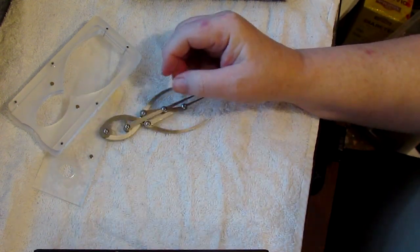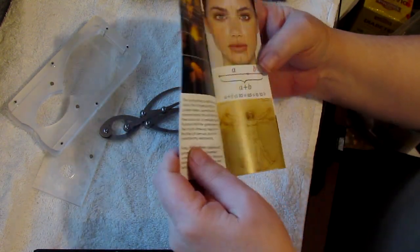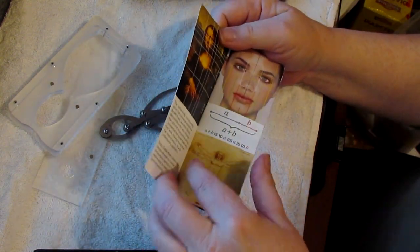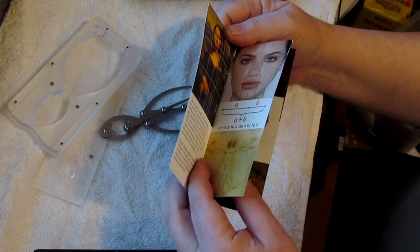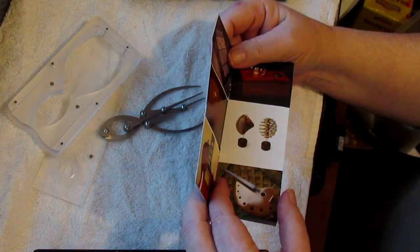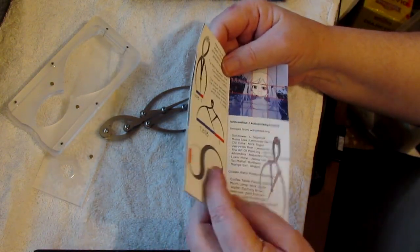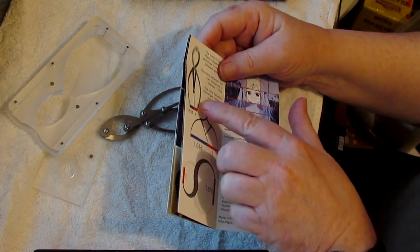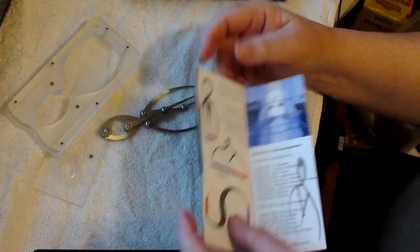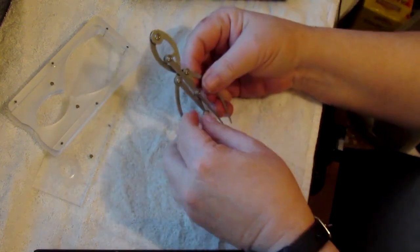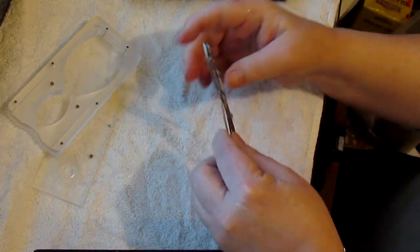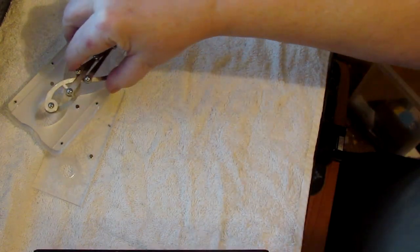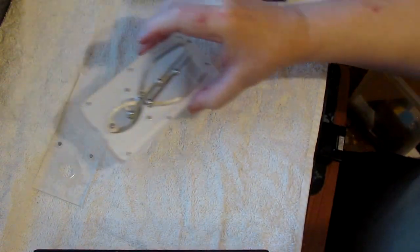It comes with a booklet that shows how an artist divides up the face and different things like that. So this one I think just measures half, and I got the more advanced one that measures more than half. Anyway, got that today.